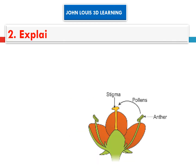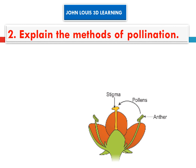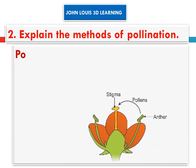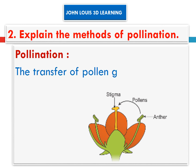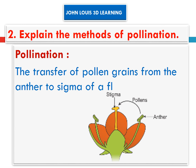We will see the second question in this chapter: Explain the methods of pollination. First of all, what we should know — what is pollination? The transfer of pollen grains from the anther to the stigma of a flower is called pollination.